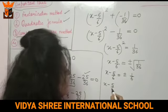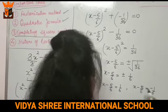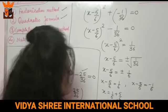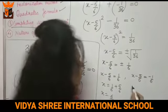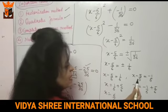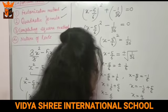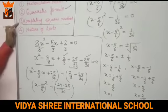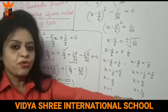Taking square root of both sides gives x minus 5 by 6 equals plus or minus 1 by 6. We form two equations: x equals 5 by 6 plus 1 by 6 which is 6 by 6 equals 1, and x equals 5 by 6 minus 1 by 6 which is 4 by 6 equals 2 by 3. So the third method also gives the same answer: 1 and 2 by 3.